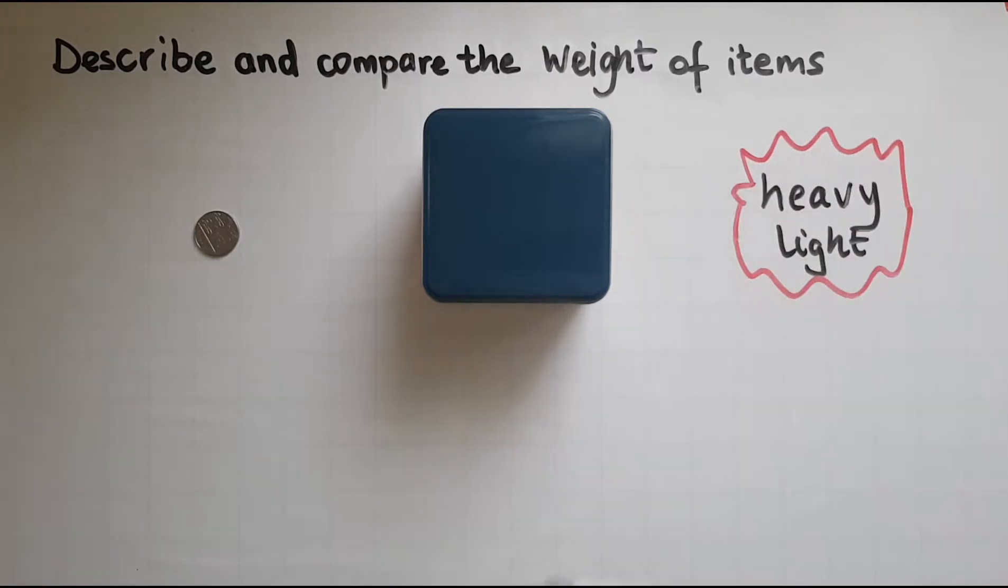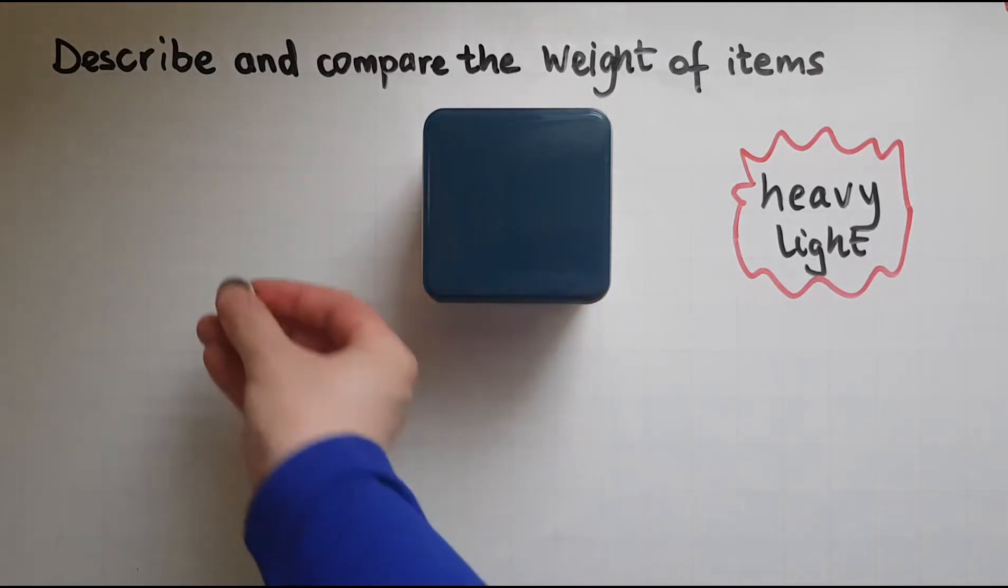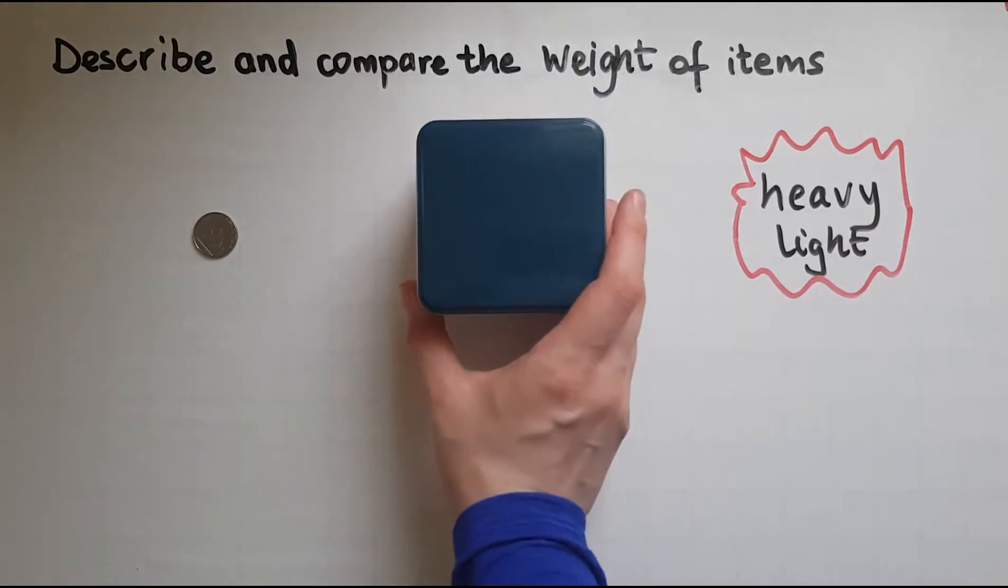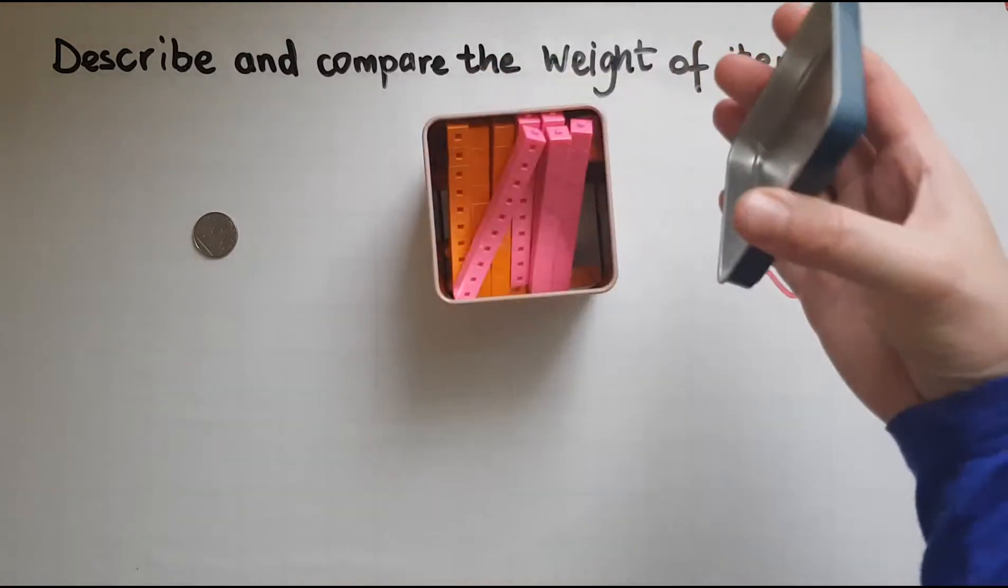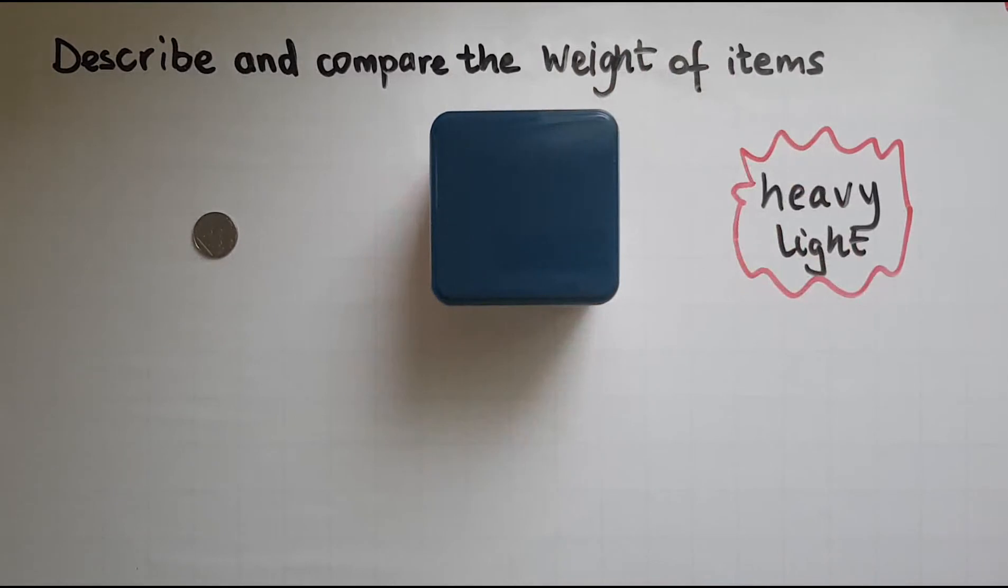So if I were to describe these two items in here, the coin would be the light item whereas the tin would be the heavy item. The tin is full of items inside, so we'll try and compare them.